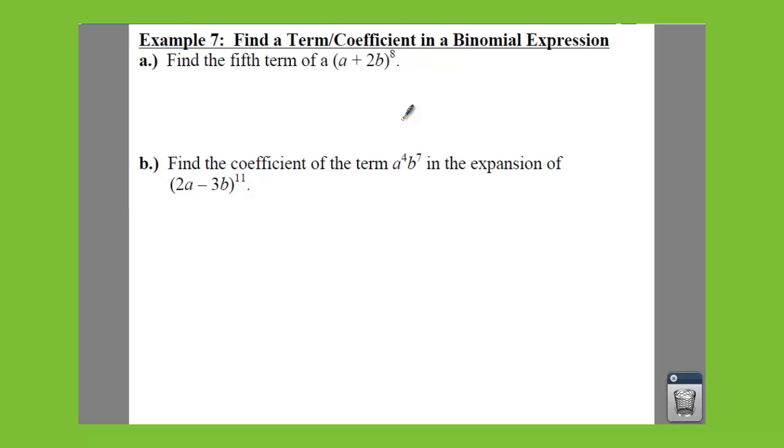Remember, we need to find the 5th term of this expression, a plus 2b to the 8th. So if we use the formula of our coefficient, which is n choose r, and then you have x to the power of n minus r and y to the power of r, we need to go through and figure out everything that we have. So let's say we're trying to find out our 5th term.